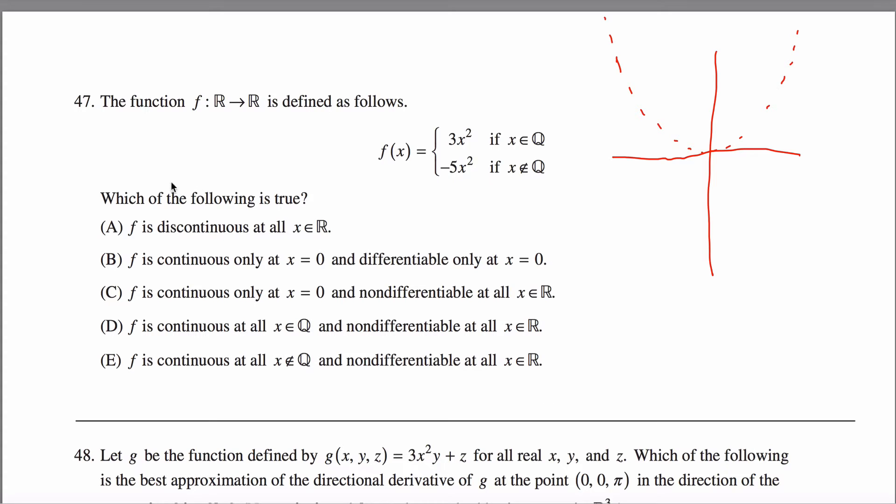But if your input is not a rational number, if it's an irrational number, then your height is going to be negative 5x squared, so it's stretched a little bit more but it's also flipped over like this. There's a poor drawing of it. So here's your graph.